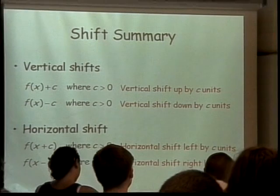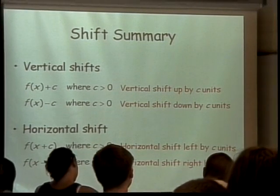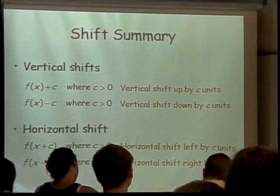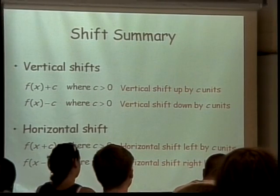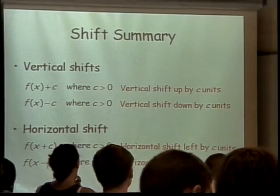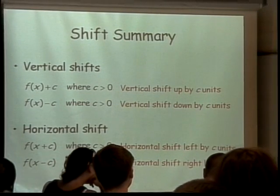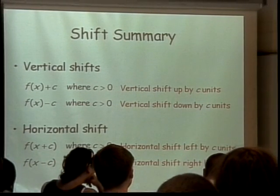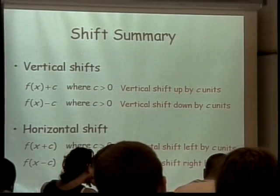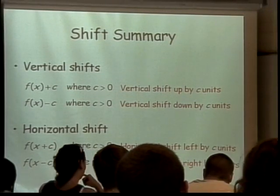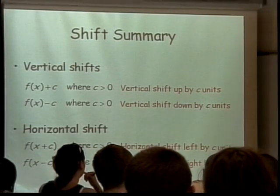Because if things were negative for stretching and shrinking, the negative essentially does a thing all by itself, and then the number does the stretching and shrinking part. The negatives inside the function or outside the function do something we refer to as reflecting, or as I mentioned, flipping. That's what we're going to get to next.